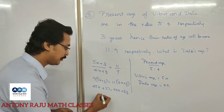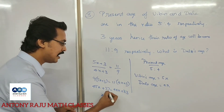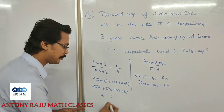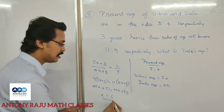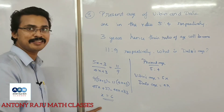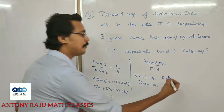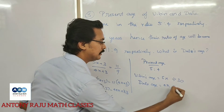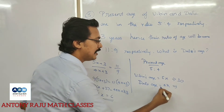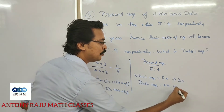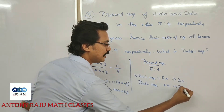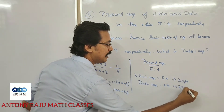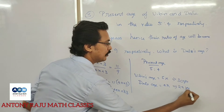From 45x minus 44x equals 33 minus 27, we get x equals 6. So Vipin's age is 5 into 6 equals 30 years old, and Dale's age is 4 into 6 equals 24 years old.